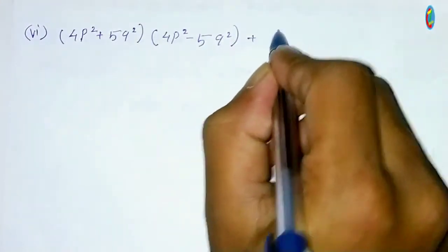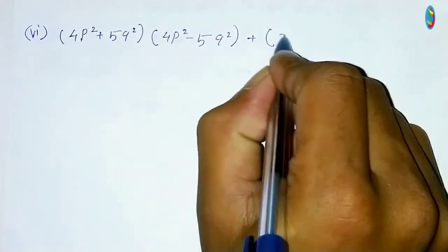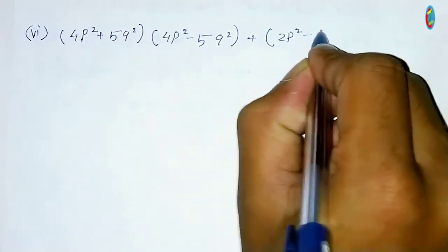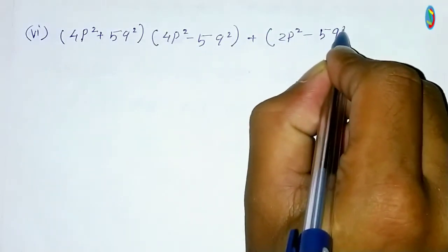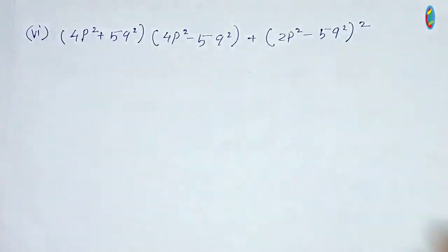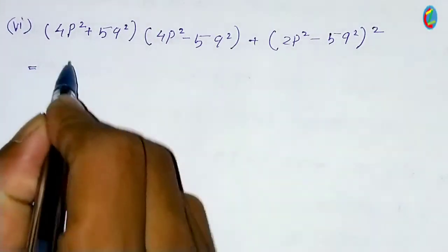4p square plus 5q square whole, 4p square minus 5q square whole, plus twice (p square minus 5q square) whole square.